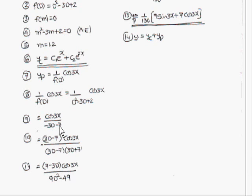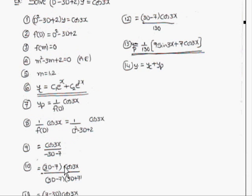Since D is still present in the denominator, we cannot substitute directly — substitution is only possible when only D² appears. So our aim is to convert the expression in terms of D². To do this, we rationalize by multiplying numerator and denominator by (3D - 7). This gives (3D - 7)·cos3x / (9D² - 49).